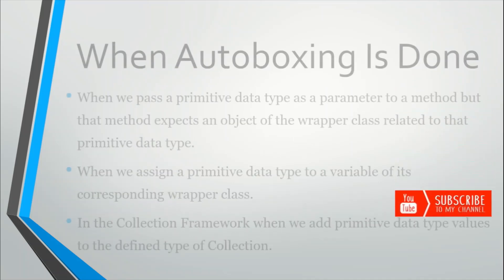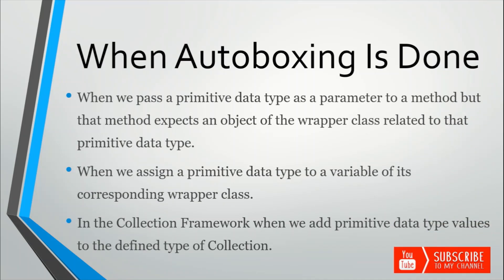Now let's see when autoboxing is done. There are mainly three cases. First, when we pass a primitive data type as a parameter to a method that expects an object of the corresponding wrapper class. Second, when we assign a primitive data type to a variable of its corresponding wrapper class. Third, in the collection framework when we add primitive data type values to a defined type of collection.